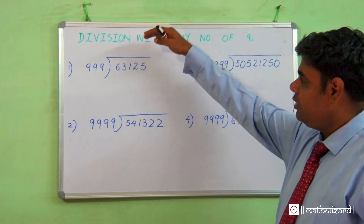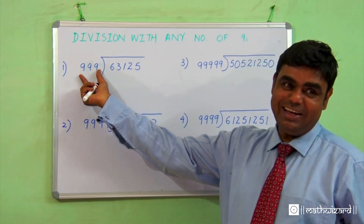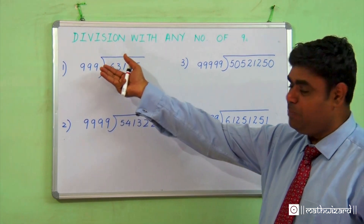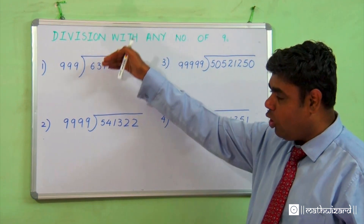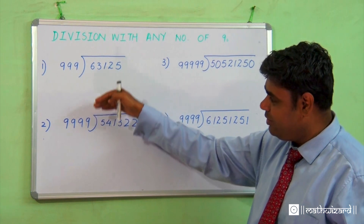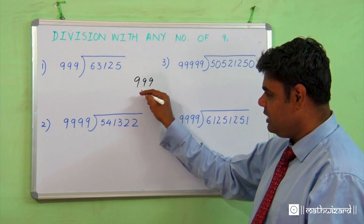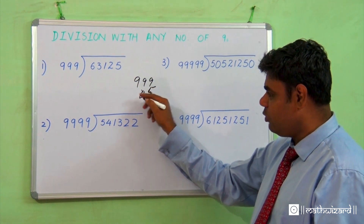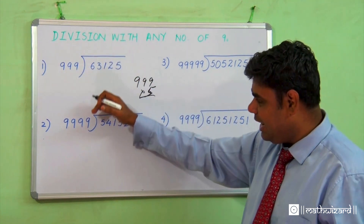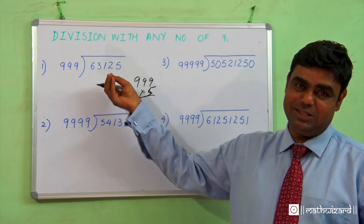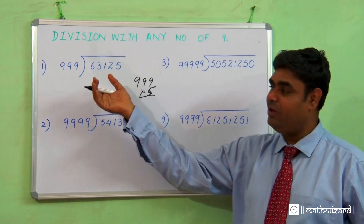Welcome to the method of division with any number of nines. If I'm dividing any number by 999-type numbers, see the beauty of Vedic maths — how easy it is. If I were to use the conventional school method, it would take lots of rough work: I'd check if it goes four times, five times, carry down the next number, and it would take a few minutes. In an examination, we are pressed for time.